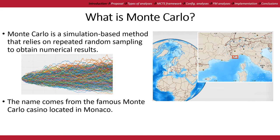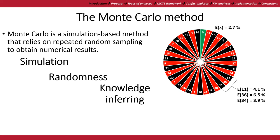Let us suppose we are in the casino, and we take note about one million rollouts of the roulette. We expect that each number appears with a frequency of 2.7%, but surprisingly we observe that for some reason numbers in this zone appear with more frequency. Maybe because the roulette has a physical failure due to usage, or the croupier is an expert on spinning the ball with a particular directional strength.